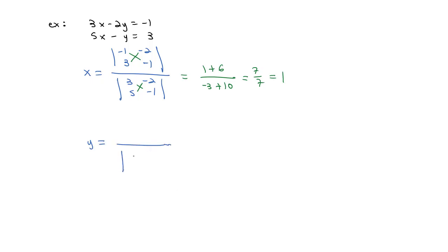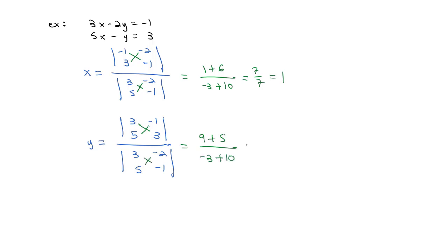Similarly for y, the denominator is the coefficient determinant: 3, negative 2, 5, negative 1. In the numerator, since y is the second variable, we replace the second column with the solutions negative 1 and 3, keeping the first column as 3 and 5. We get 9 minus negative 5 equals 14 in the numerator, and negative 3 minus negative 10 equals 7 in the denominator. So y equals 14 over 7, which equals 2. The solution is x = 1, y = 2.